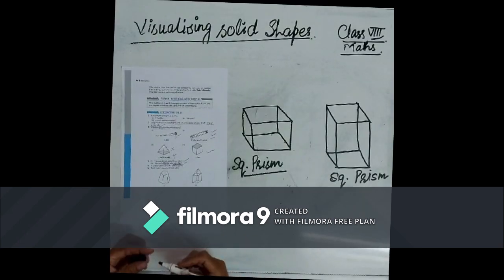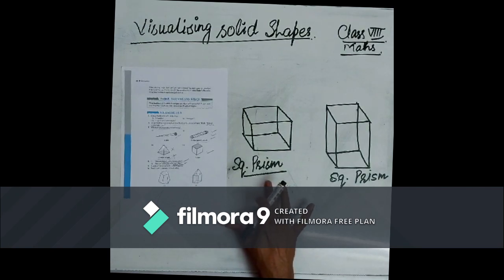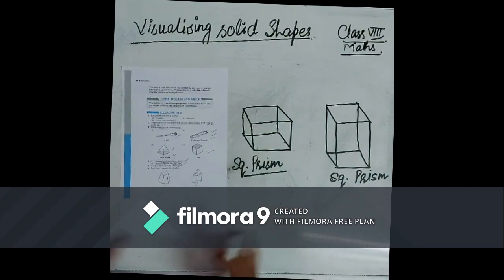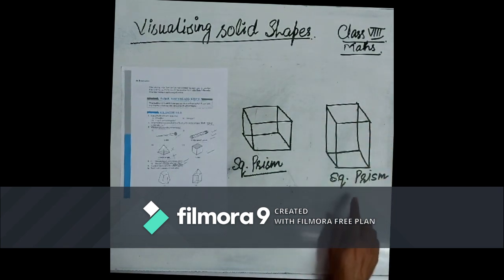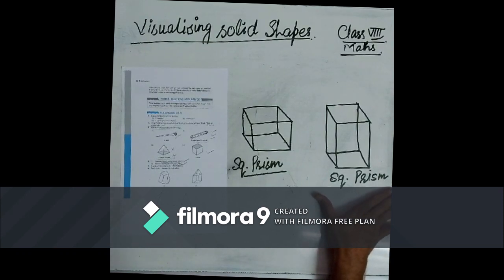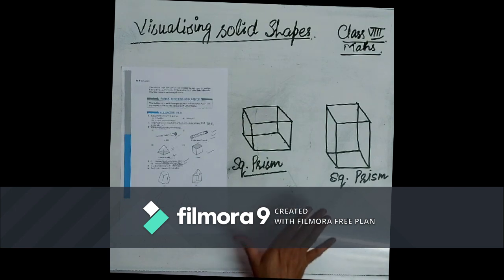The next question, number five: is a square prism the same as a cube? Whenever the base and top are squares, it is known as a square prism. It is a cube, of course, but when the base and top are squares and the lateral faces are rectangles, it is again a square prism, not a cube. So it is not true that a square prism is the same as a cube.